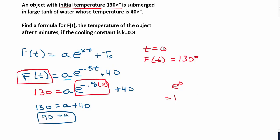So now that I have the value of a, I can simply replace a with 90 in this model here, and I've found all three unknowns in the formula. I found the value of a, it was given to me what k was, and it was given me what t sub s was. So my completed model would be f of t equals 90 e to the negative 0.8 t plus 40. So hopefully that made sense, and as always, best of luck.